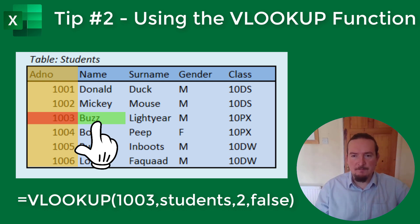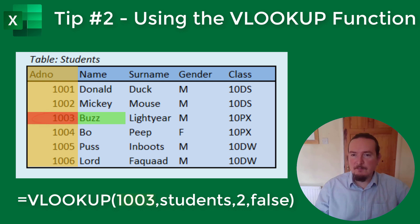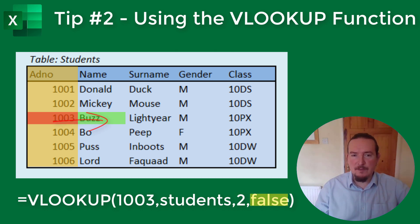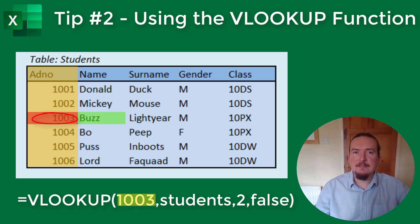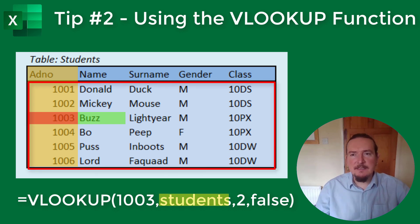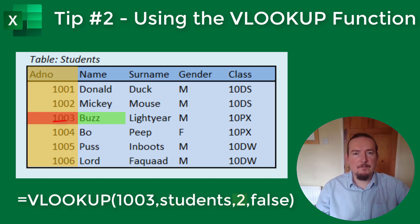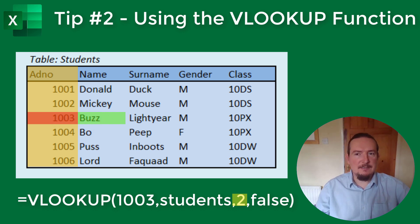Now let's break that function down. This function needs four input values: equals VLOOKUP, open brackets, then the first value is the value to find, next comes the range containing that value, third is the column to read off. So the first was the value you are looking up — in this example the number 1003. The second value is the data range containing the information, in this case the named range STUDENTS. The third value is the column we want to read across to — the names are stored in the second column of the STUDENTS data range, hence the value 2.